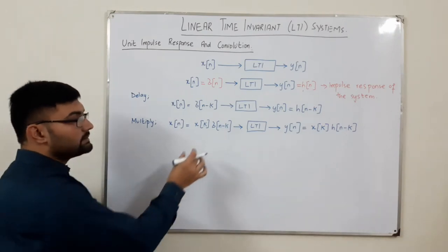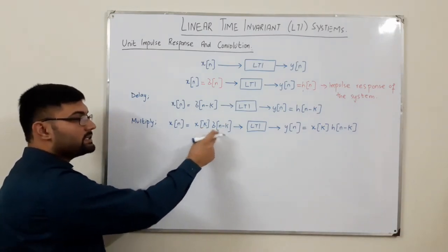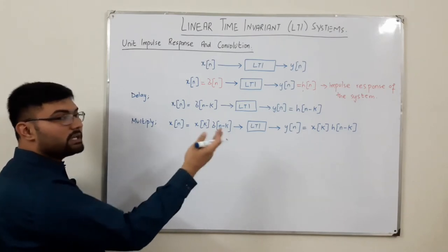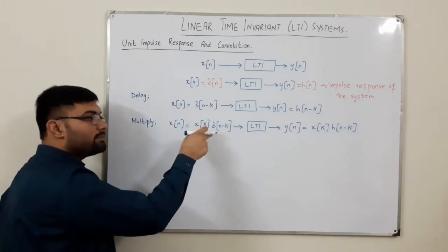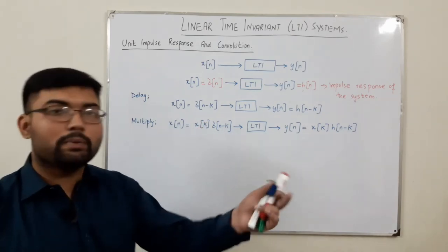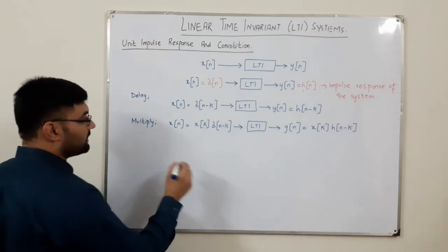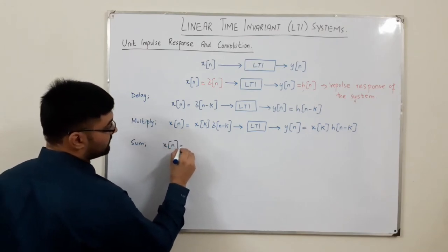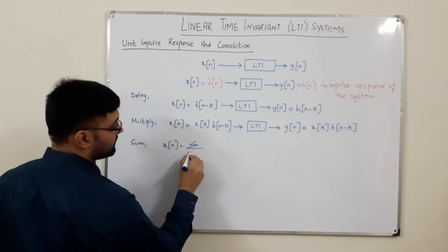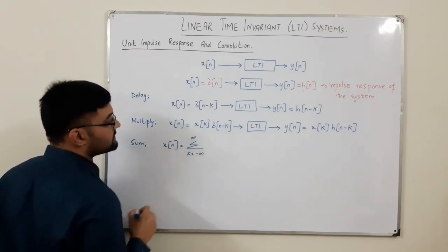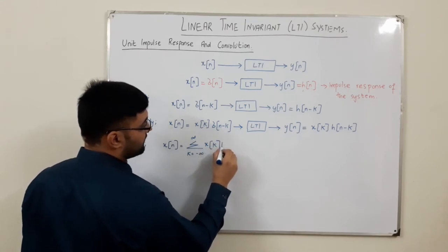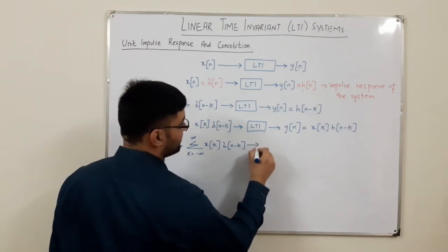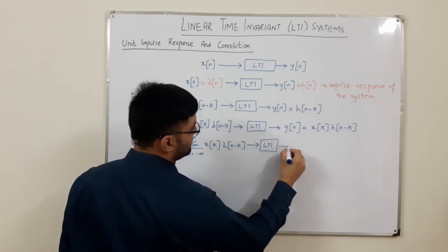We are representing some particular value of the function as an impulse. If I sum this from negative infinity to infinity, it gives me any general signal in terms of the impulse signal — which is the sampling property we saw in the previous video. So X of n is the summation with k running from negative infinity to positive infinity of X of k times Delta of n minus k, provided to the LTI system.